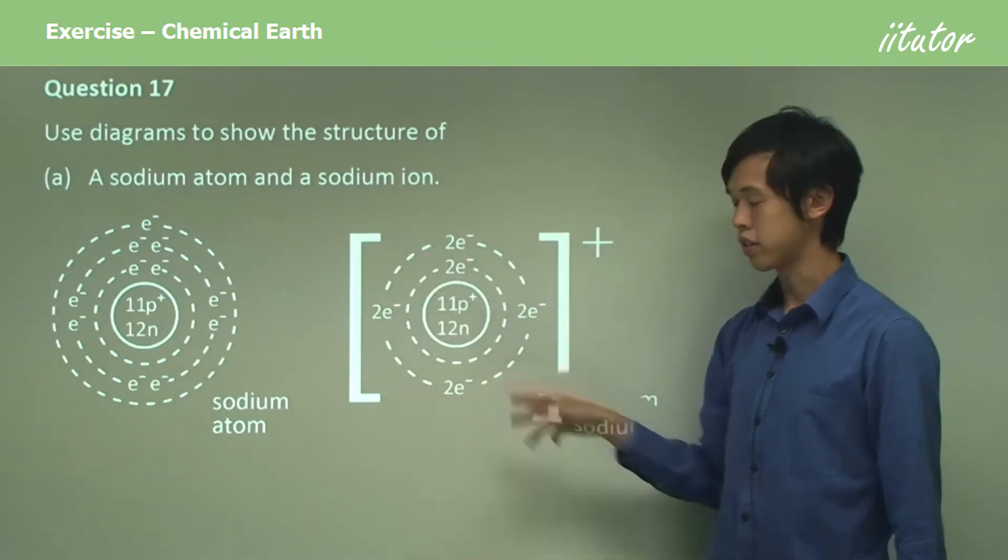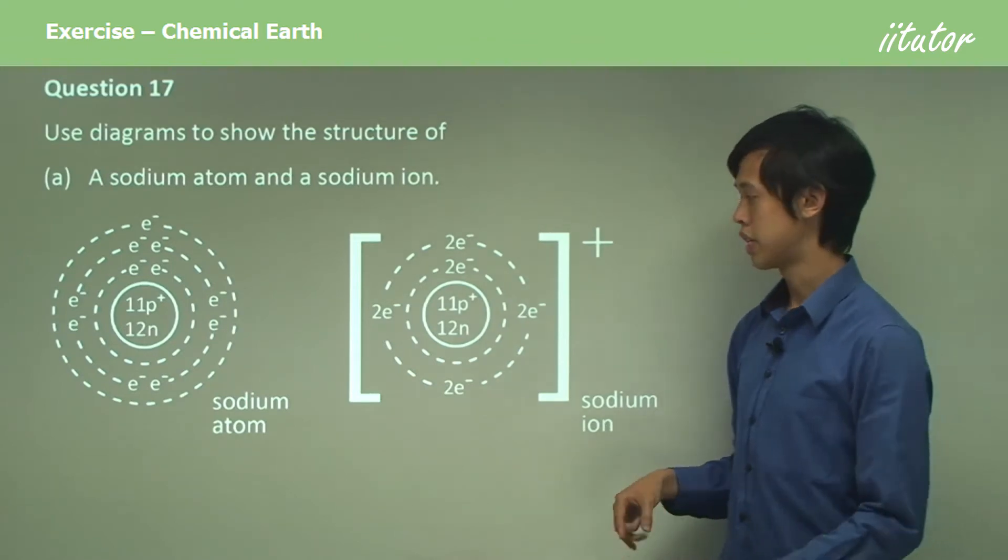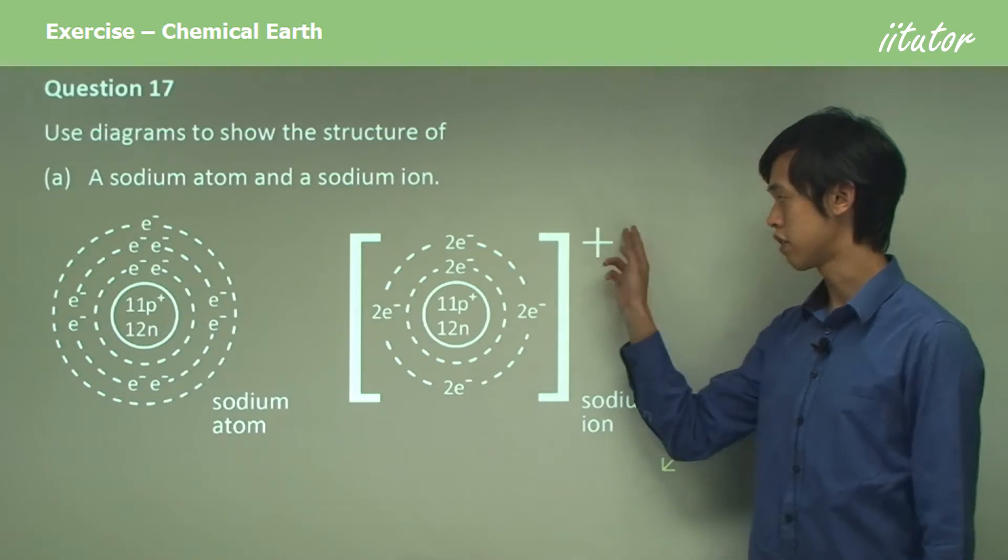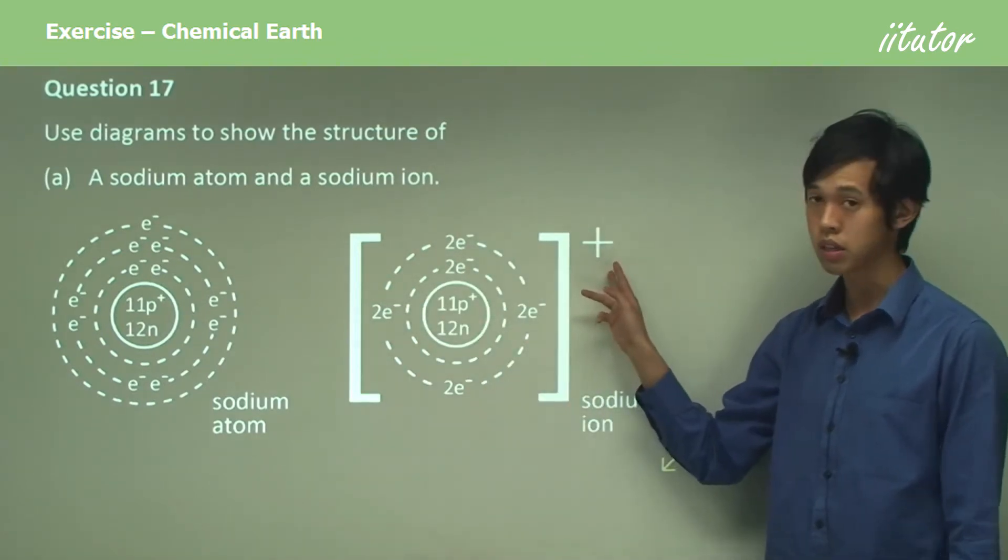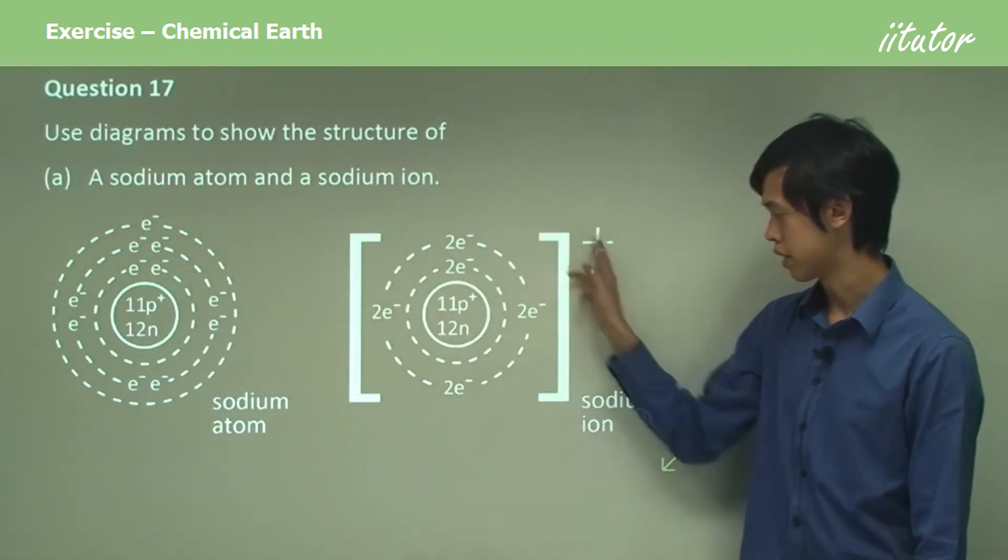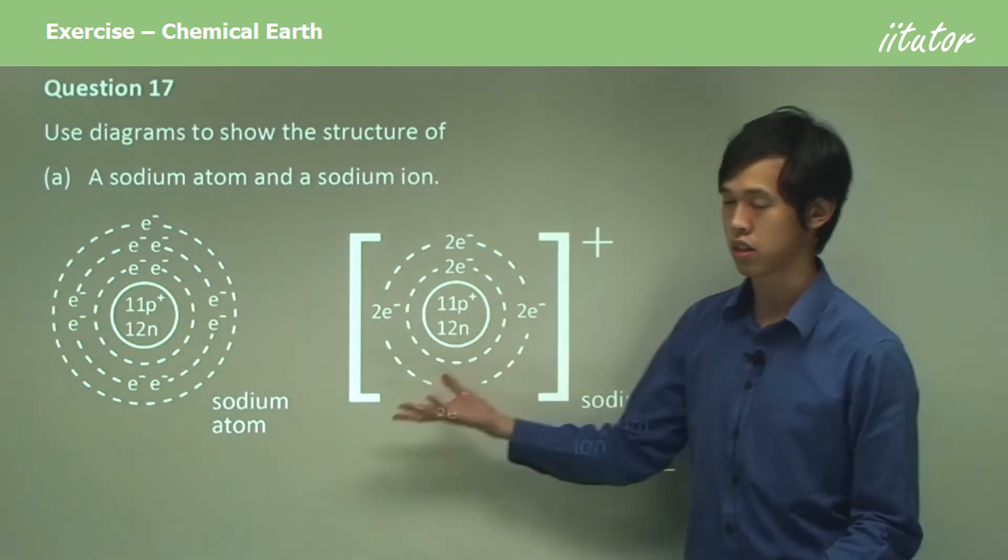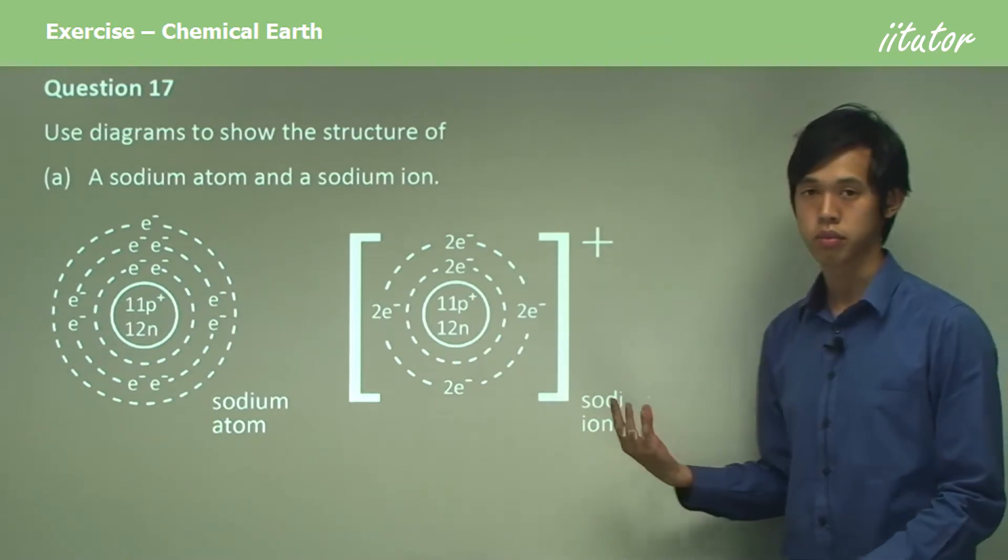Because now it's got eight electrons in its outermost shell, and so now there's one less electron, but the proton number hasn't changed. So the charge of this particle is now plus one, and that's why we have these big brackets with a plus. So that's what we mean by a diagram to show the structure of sodium atoms and sodium ions.